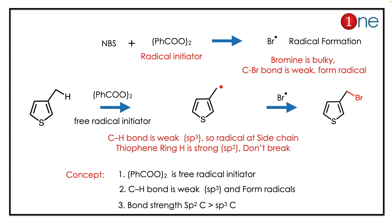The peroxide radical initiator reacts, and you have a methyl radical here. The C-H bond in the ring does not break because of the sp2 carbon — the sp2 C-H bond is stronger, while the sp3 C-H is weaker — so the radical forms at the side chain. It combines, and you have bromine formation, so the final product has bromine substituted at the side chain.